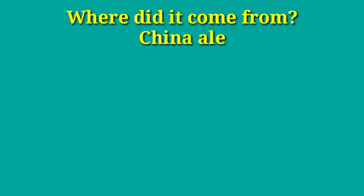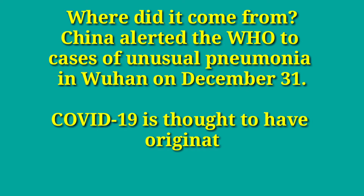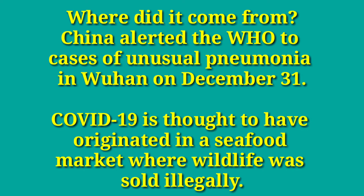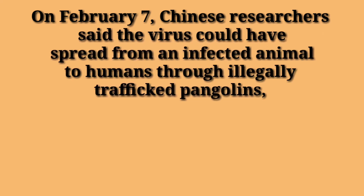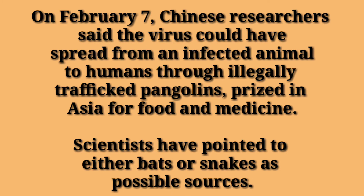Where did it come from? China alerted the WHO, the World Health Organization, of cases of unusual pneumonia in Wuhan on December 31. COVID-19 is thought to have originated in a seafood market where wildlife was sold illegally. Chinese researchers said the virus could have spread from infected animals to humans. Scientists have pointed to either bats or snakes as possible sources.